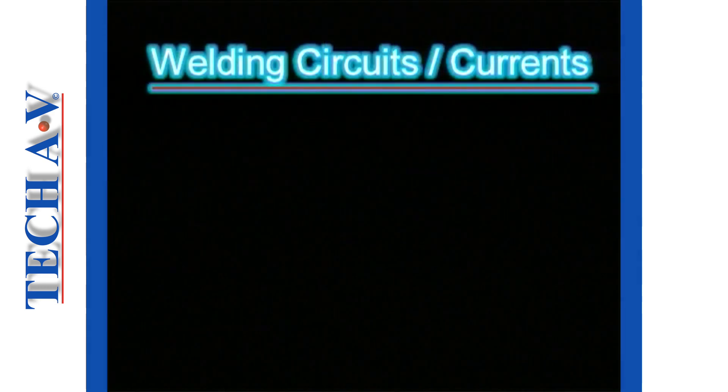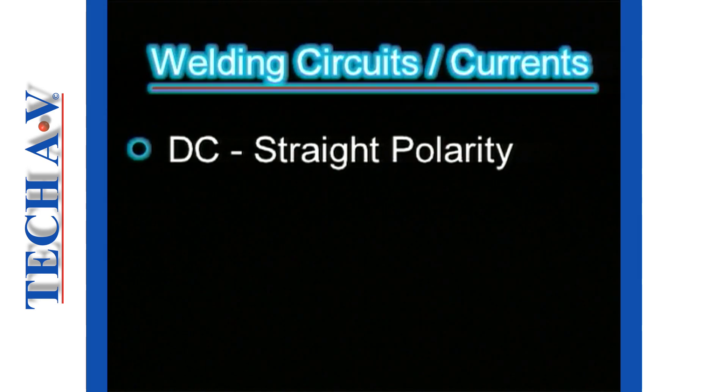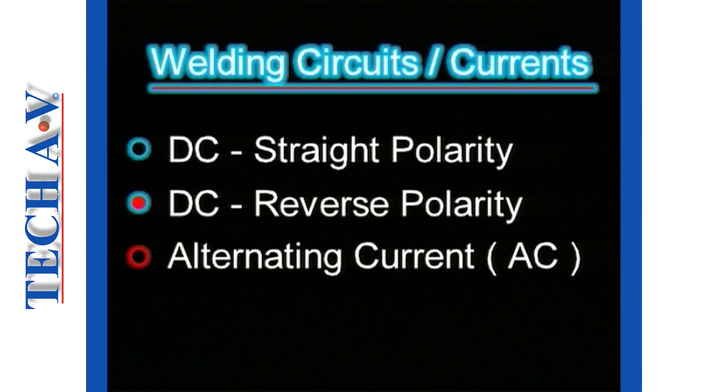Welding circuits may be configured in the following ways: direct current straight polarity, direct current reverse polarity, and alternating current.